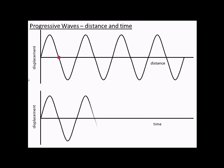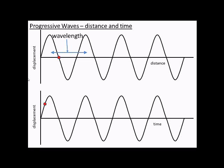Both times, though, the y-axis is displacement. So we can plot wavelength on the distance axes, or period on the time axes. And using the period, we can obviously work out the frequency.